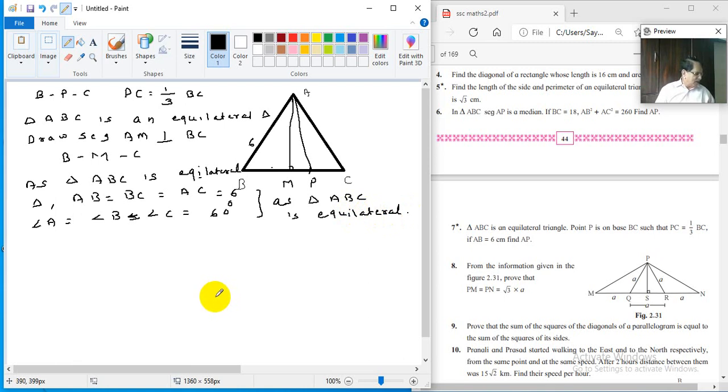If you consider triangle AMC, angle C is 60 degrees, angle M is 90 degrees. So angle MAC will be 180 minus 90 degrees minus 60 degrees. So it is 30 degrees. From this result we can say that angle MAC is 30 degrees. So triangle AMC is 30, 60, 90 triangle.